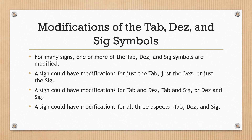Modifications of the TAB, DES and SIG symbols. For many signs, one or more of the TAB, DES and SIG symbols are modified. A sign could have modifications for just the TAB, just the DES, or just the SIG. A sign could have modifications for TAB and DES, TAB and SIG, or DES and SIG. A sign could also have modifications for all three aspects: TAB, DES and SIG.